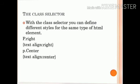Next, the class selector. With the class selector, you can define different styles for the same type of HTML element. Say that you would like to have two types of paragraphs in your document: one right-aligned paragraph and one center-aligned paragraph. We can specify the class selector for this document.